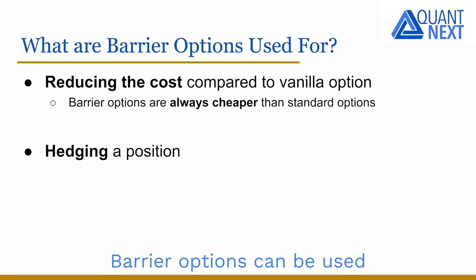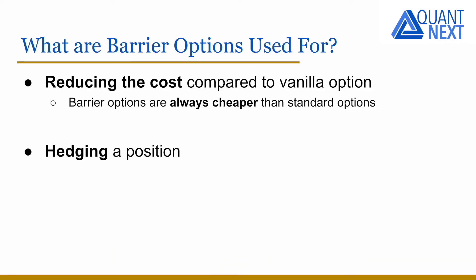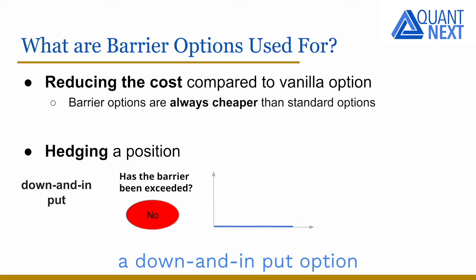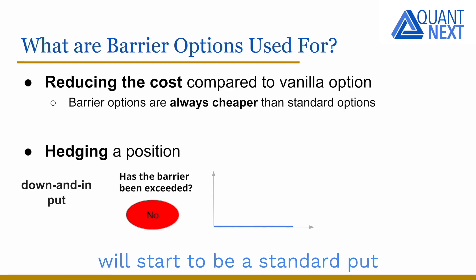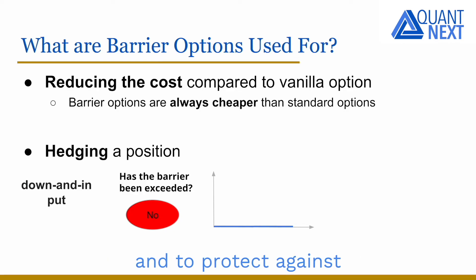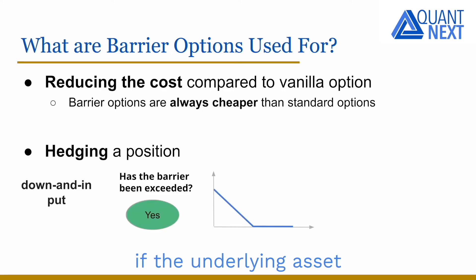Barrier options can be used to hedge a position. For example, a down and in put option will start to be a standard put and protect against the downside risk if the underlying asset goes below the barrier level.